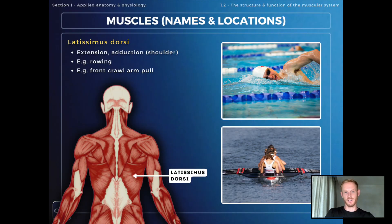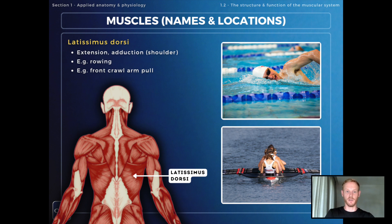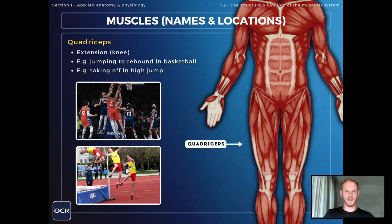The other muscle in the back that you need to know about is the latissimus dorsi, and this one is primarily involved in extension and adduction at the shoulder joint — pulling the arms towards the midline of the body and backwards. A couple of good examples of the action of the latissimus dorsi include rowing and pulling the arm through the water when performing the front crawl.